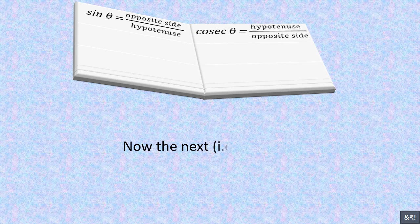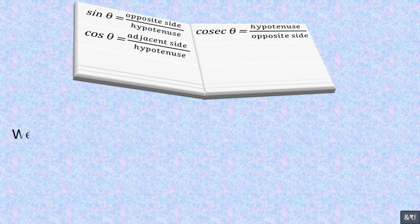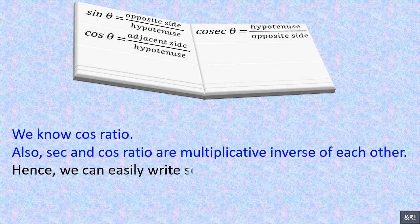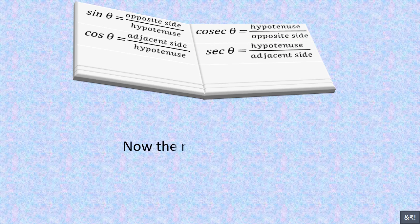For the sec ratio: since cos θ = adjacent side / hypotenuse, and sec and cos are multiplicative inverses of each other, we can easily write: sec θ = hypotenuse / adjacent side.